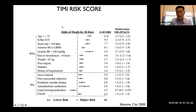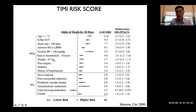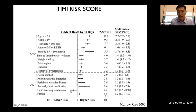The TIMI risk score looks at odds of death at one month. Older age, higher Killip score, fast heart rate, left bundle branch block, and low blood pressure all increase mortality risk. Prior heart disease, diabetes, and high blood pressure also worsen outcomes. Notably, being on a lipid-lowering medication reduces mortality risk, likely because it reduces plaque and blockages throughout the vascular system.